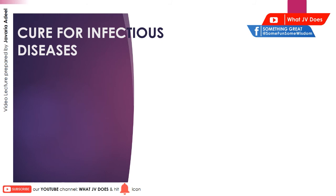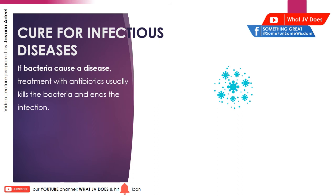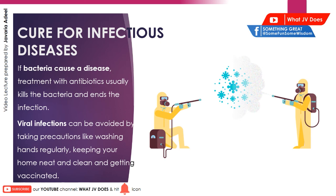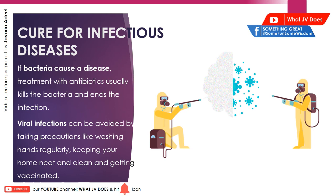Moving on towards the cure for infectious diseases: if the diseases are caused by bacteria, then the treatment is directly antibiotics, because antibiotics kill the bacteria and end the infection. Whereas if the diseases are viral, then only precautions can protect you against viral infections — precautions like washing hands regularly, keeping your home neat and clean, and getting vaccinated.